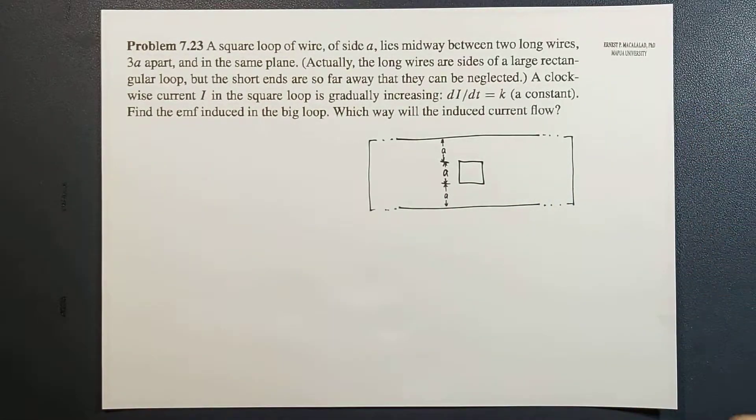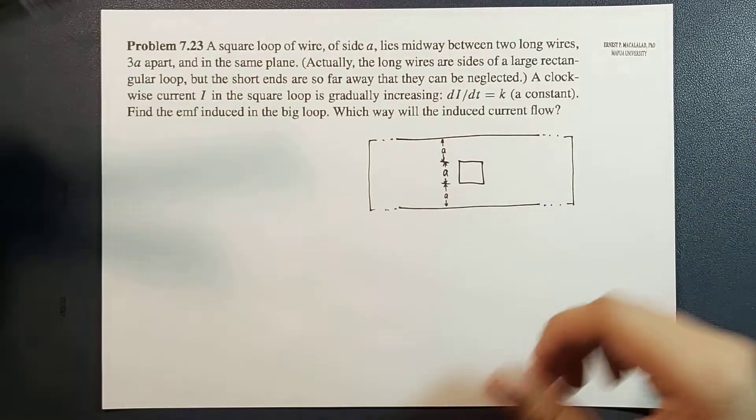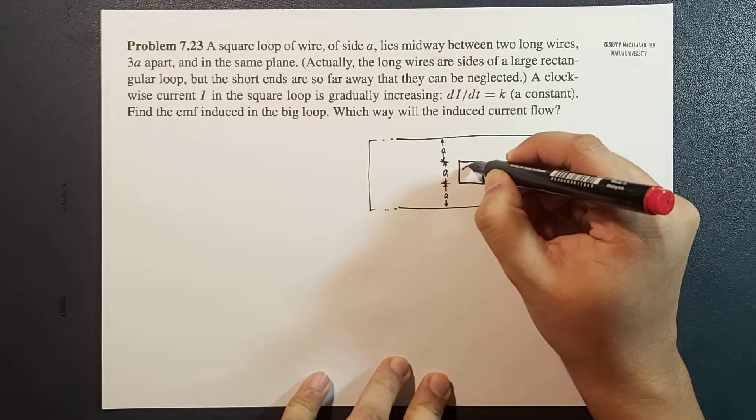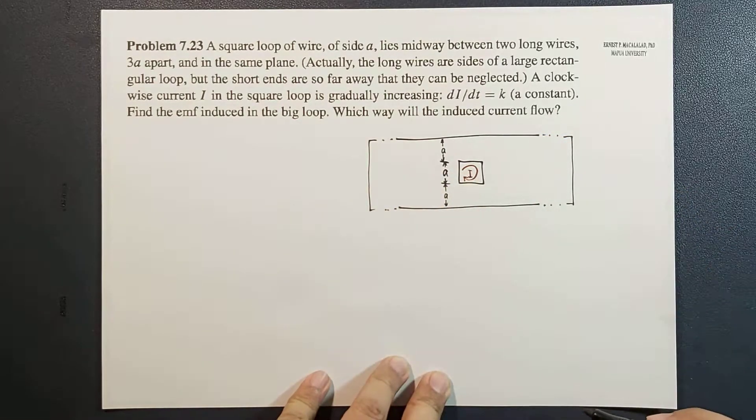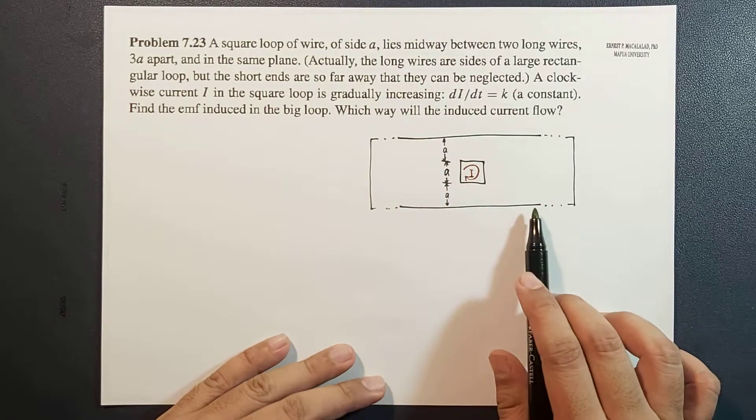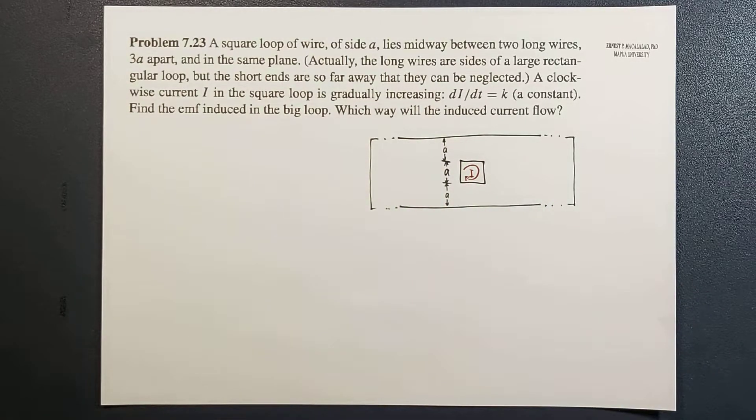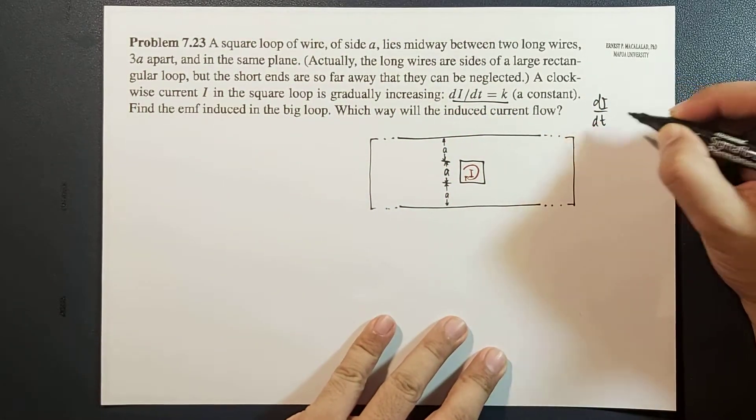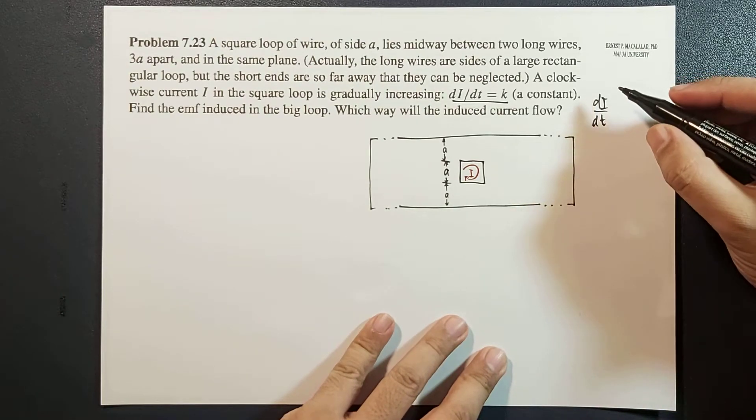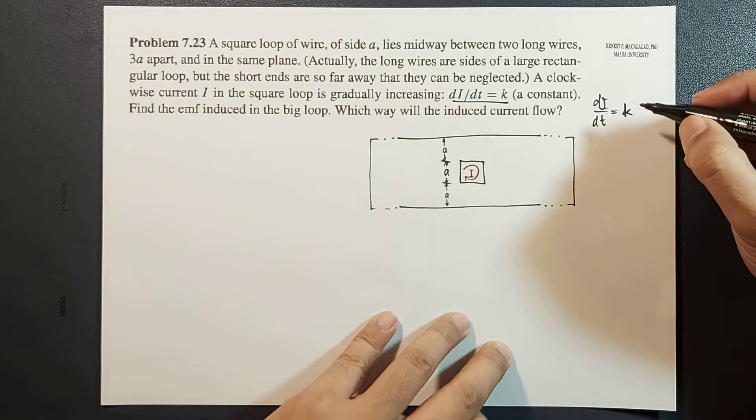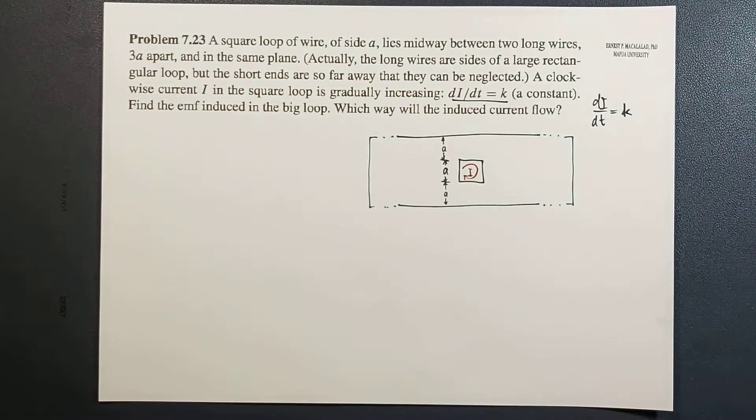Here, the direction of the current in the small loop would be in this direction. So we are going to do that by first setting that. As mentioned here, the derivative of the current in the wire in the square loop is constant and it is positive.